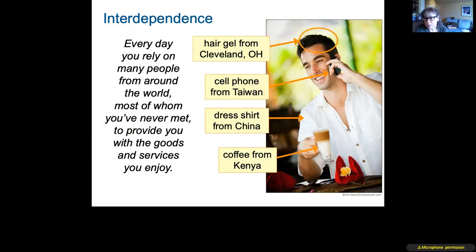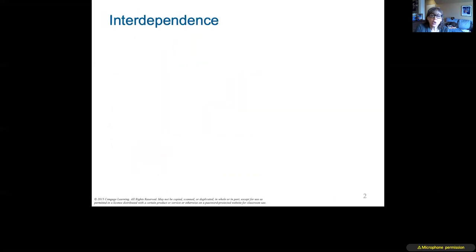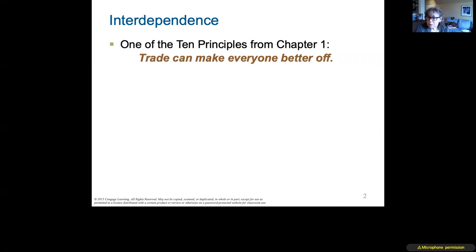Interdependence means we rely on each other. Consider a gentleman in Kansas City: his hair gel comes from Cleveland, his cell phone from Taiwan or China, his dress shirt from China, Indonesia, or Mexico, his coffee from Kenya or Colombia, and his milk from Wisconsin or just outside Kansas City. We rely on people from around the world for the things we enjoy. One of the ten principles from chapter one is: trade makes everyone better off.